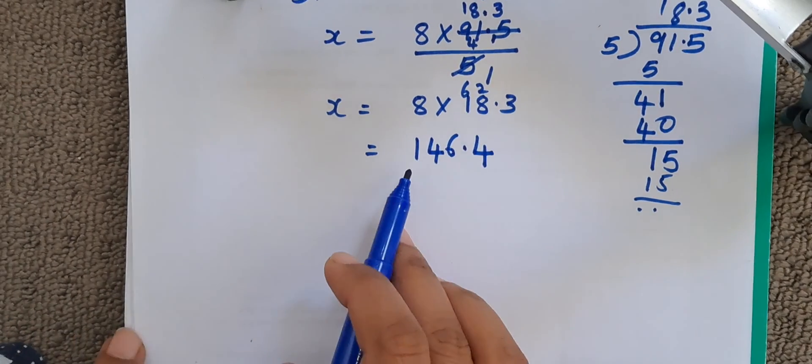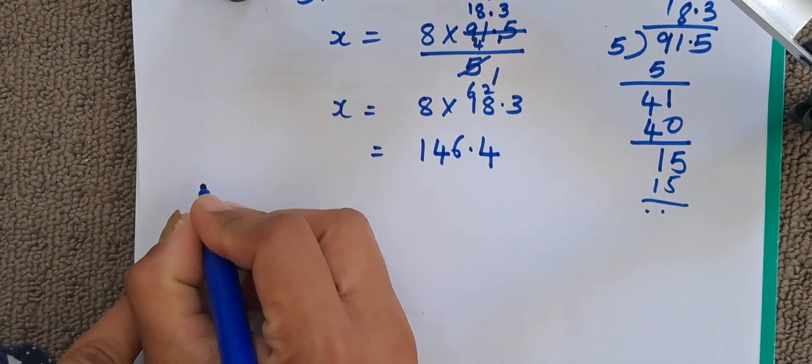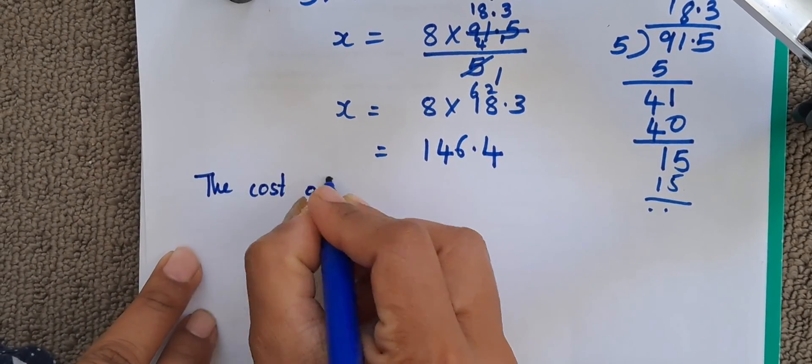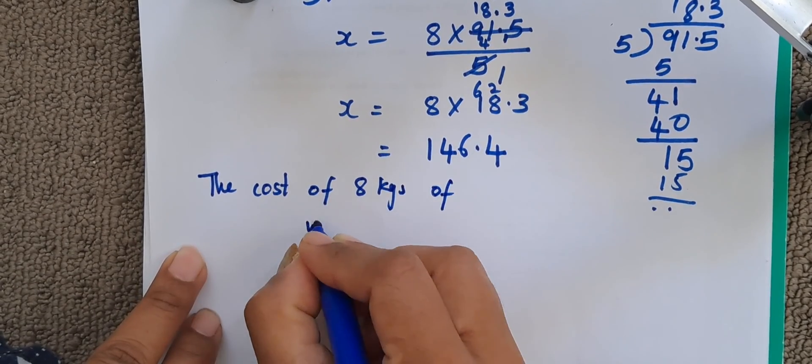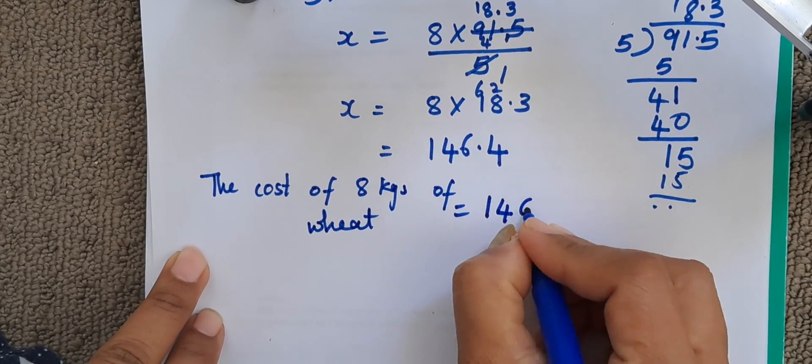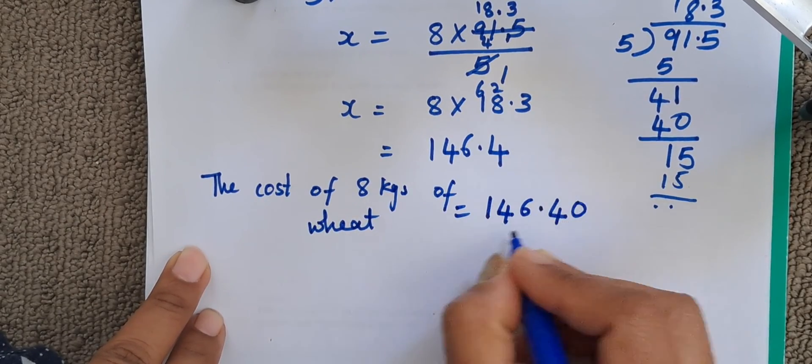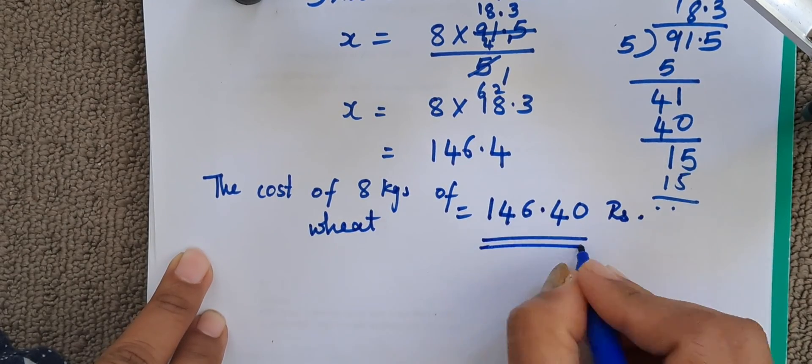We got answer as 146.4. So we write it as the cost of 8 kgs of wheat is equal to 146.40 rupees. That is the first answer.